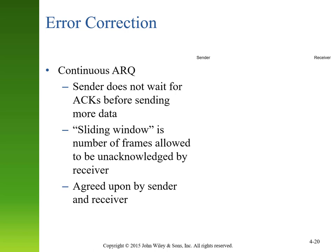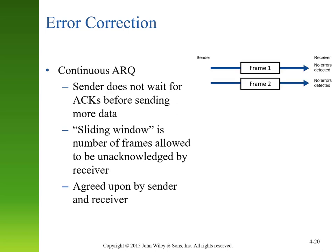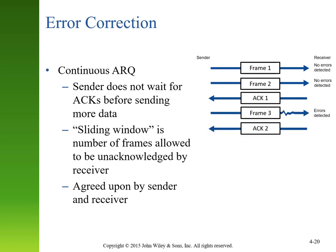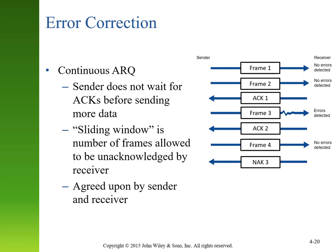An alternative to stop and wait is continuous ARQ. The sender doesn't wait for acknowledgements before sending more frames, using a sliding window to decide how many frames to allow before an acknowledgement is required. Acknowledgements are specific — for example, 'I got frame one.' If frame three has an error, the receiver sends a non-acknowledgement specifically for frame three, and it gets resent. The recipient must buffer all frames because they may arrive out of order and must be reassembled properly.